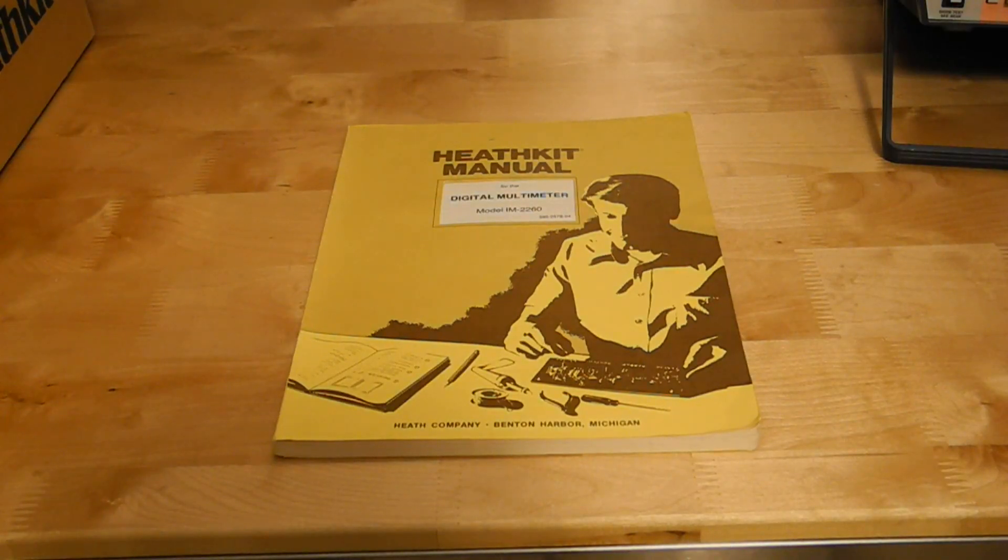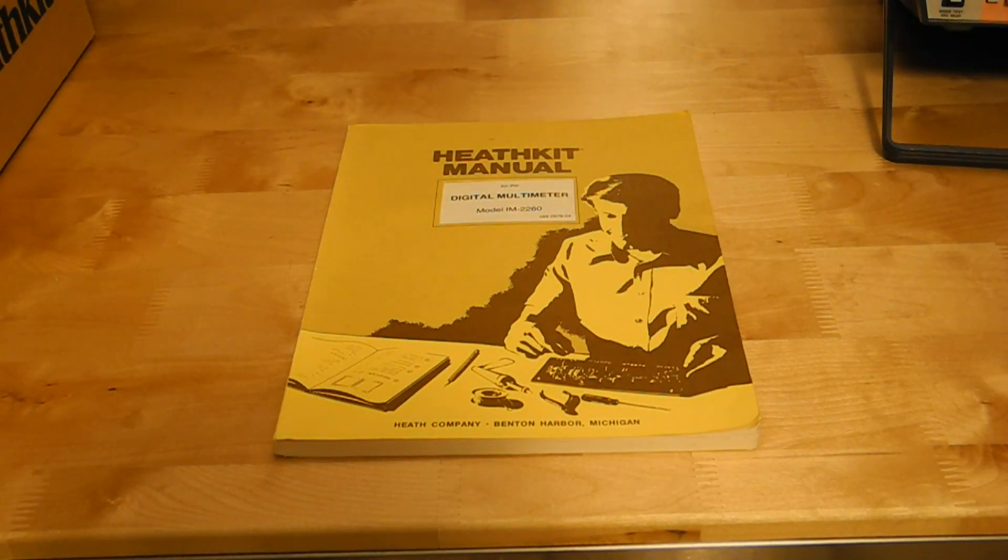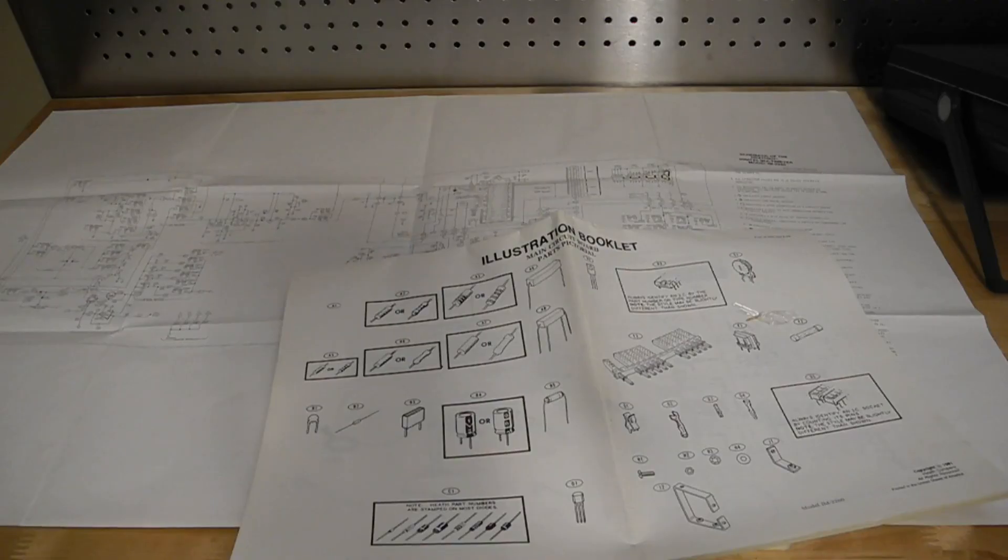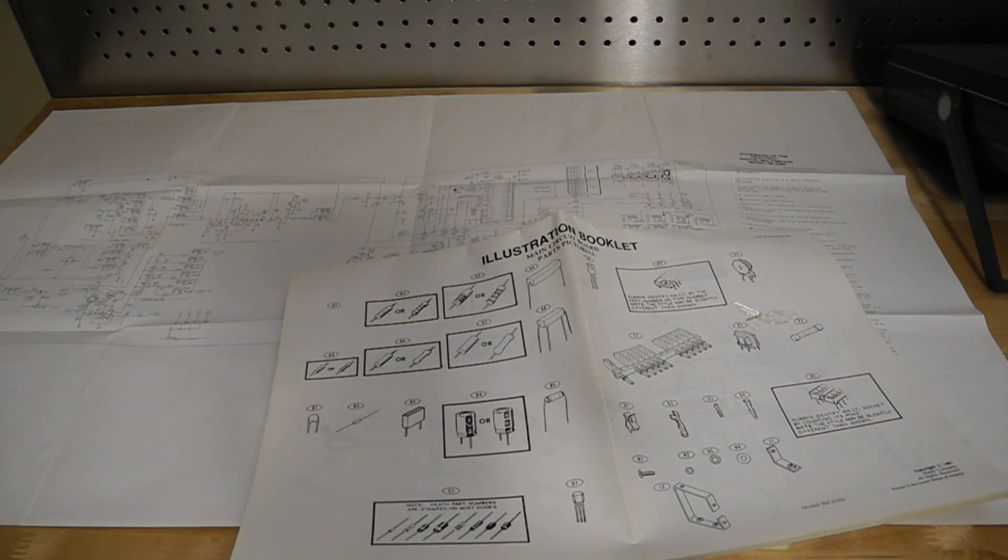The manual is dated 1981 and is the usual extensive Heathkit manual, 150 pages long covering assembly, test, operation and circuit description. Also included was a large schematic and fold-out pictorials to aid in assembly and calibration.